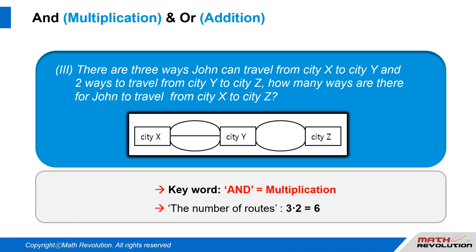Again, see the word AND so we multiply the given numbers of routes. 3 times 2 is 6. All right, thank you. We'll see you next time.